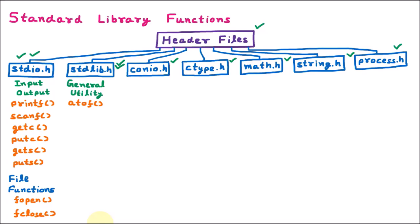The next function is atoi — 'a' signifies argument, meaning string to 'i', where 'i' means integer. So it converts string to integer. The next function is atol — 'a' is argument, meaning string to 'l', where 'l' means long integer. So we convert string to long integer. The next function is atoll, which converts string to long long integer.